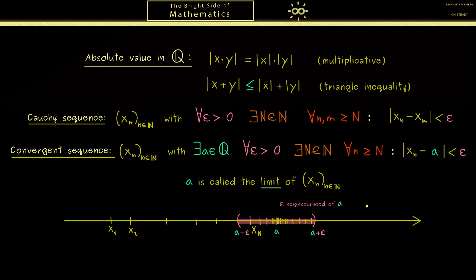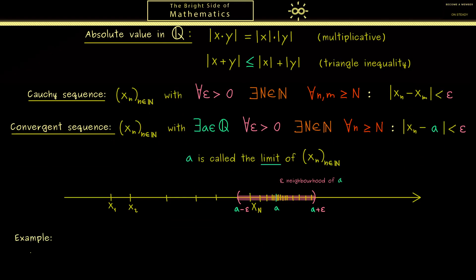Okay, with this let's look at an example. Indeed, the first example one sees most of the time is the sequence 1 over n. Here you should see the sequence members get closer and closer to the number 0. Okay, I think that should be clear, and if you want to see a proof in a formal way we will do this later.